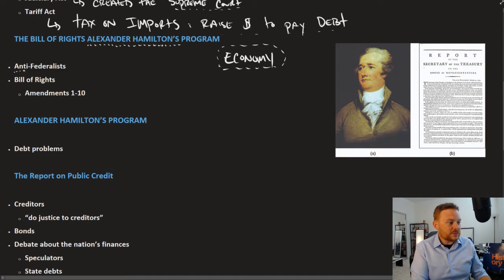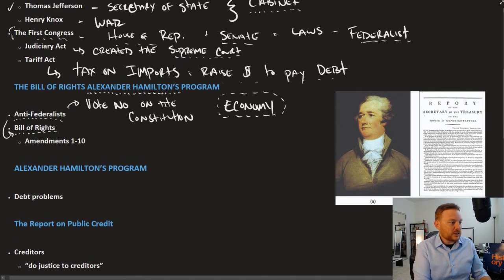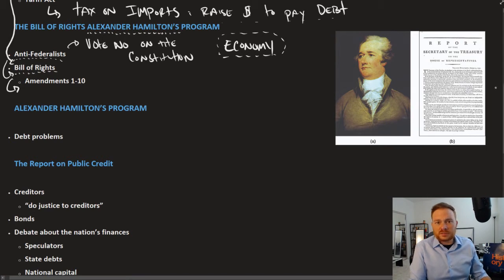Before we get to that, recall the Anti-Federalists were the ones who said vote no on the Constitution. They believed it was too much power in too few hands. But many came around and said they would vote yes if you include a Bill of Rights.